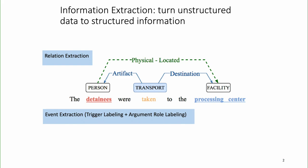Here's an example. Given this sentence, we want to find there's a located relation and there's a movement event. We know the destination and we know the person who is being moved.